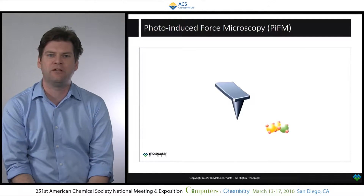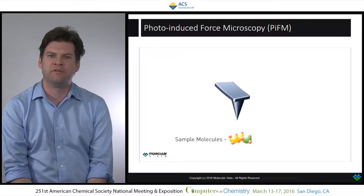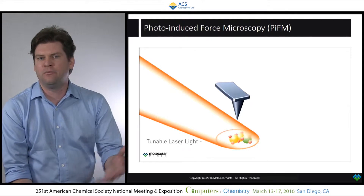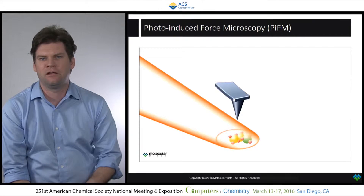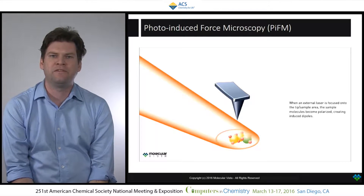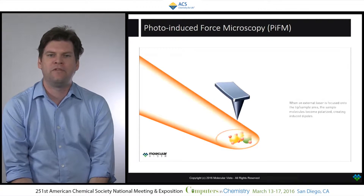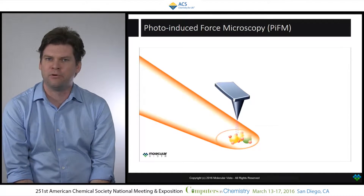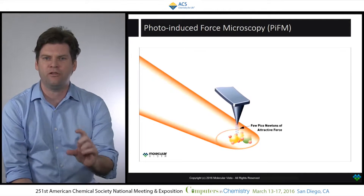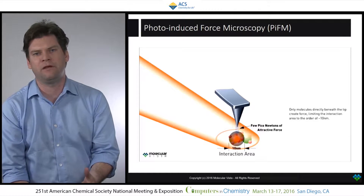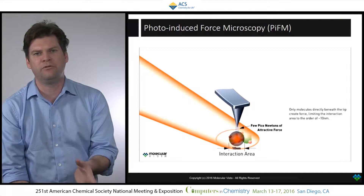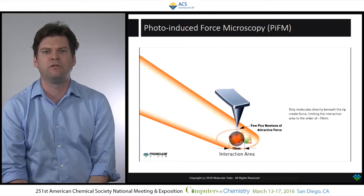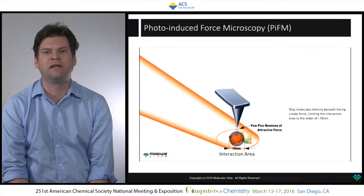This is how it works. We take a metal-coated AFM tip, put it in proximity of a molecule, and then illuminate that molecule with laser light that induces a dipole in the sample or in the molecule. The tip itself, because it's metallic, ends up creating an image dipole in that tip, and there's a small attractive force between the tip and the sample — just a few piconewtons of force over a very small interaction area, basically localized to the end of the tip, about 10 nanometers.